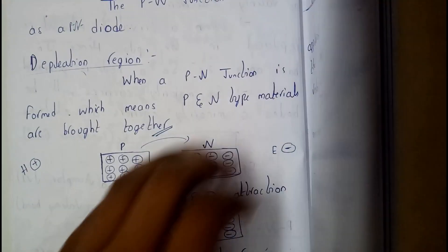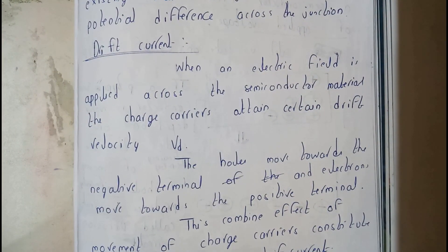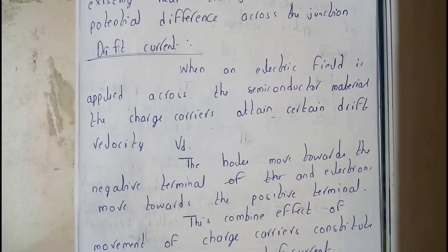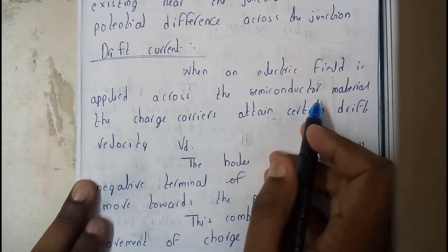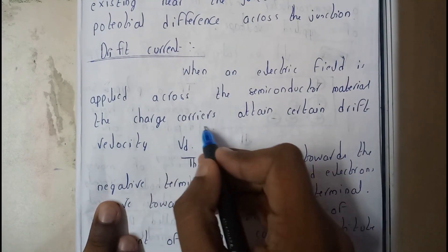Now let us go through drift current. This is somewhat opposite. In diffusion we didn't apply any power supply. Here we will be giving a supply - voltage.